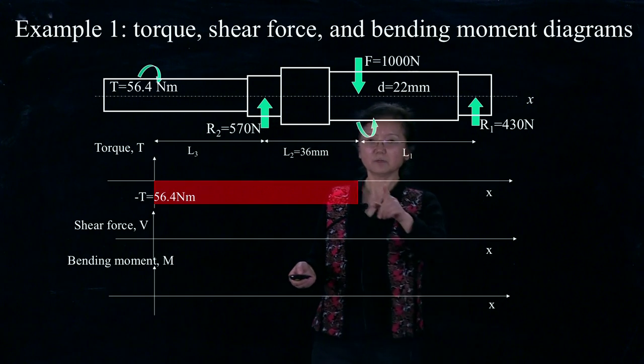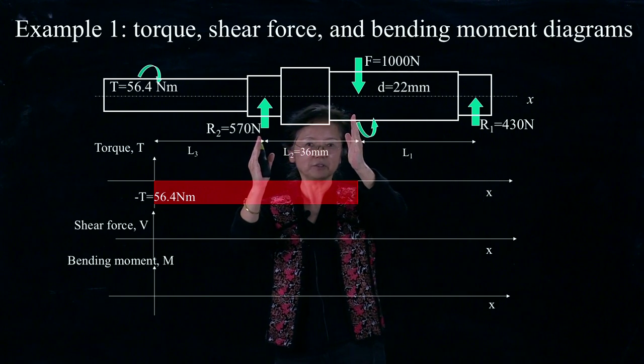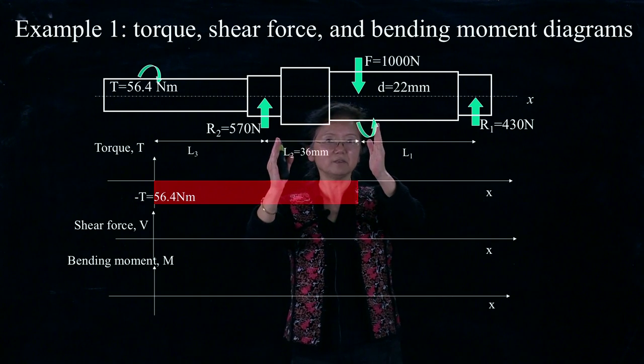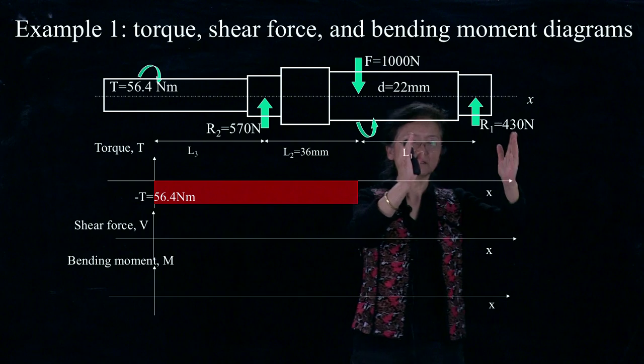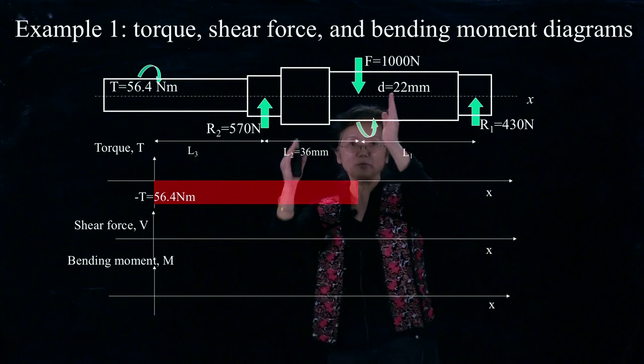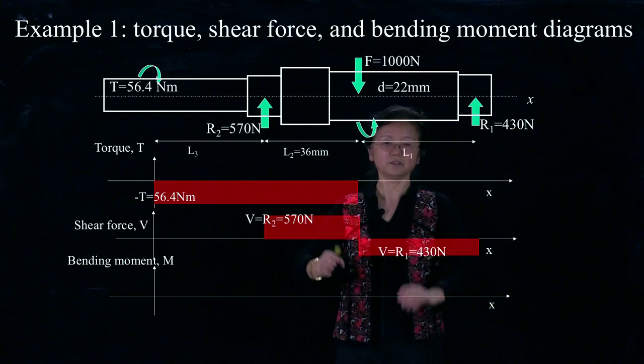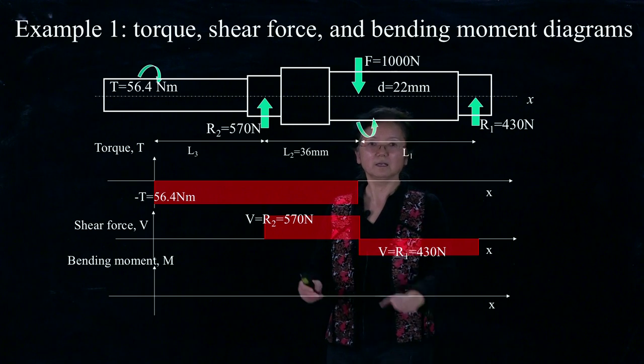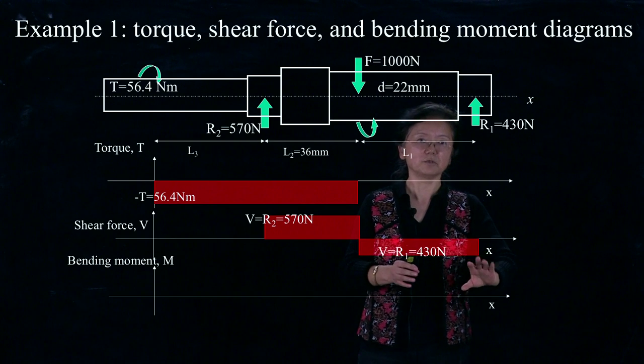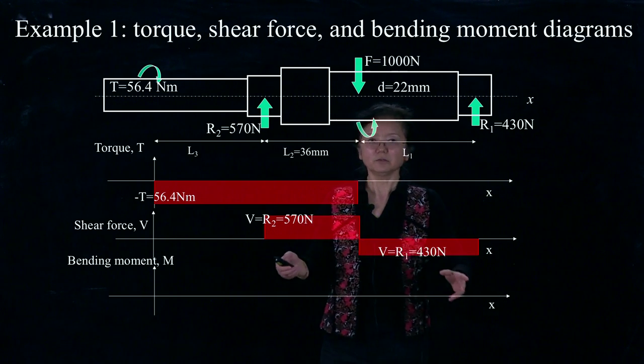Next one is for shear force. We have two segments for shear forces. One's here, the other one's here. Obviously, this is based on our sign convention, positive. But this segment gives us negative shear force. So in between this, constant. In between this, another constant. So we can have the shear force diagram very easily. This side, shear force equals R2. And this side, it equals negative R1.